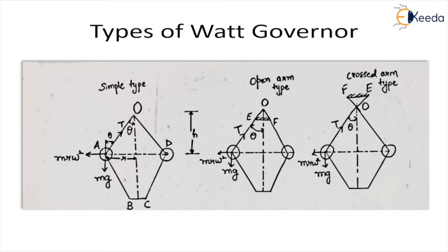There are generally three types of Watt governors; the basic construction remains the same with small variations. The first one is the simple type, also called the penned governor, because the upper arms are pinned at a point O. The working of all of them remains the same — the balls move upward or downward whenever the spindle revolves, the lower arms are connected to the sleeve and it causes control of the throttle valve and the fuel supply. We have just kept this part to understand the basic construction and the working.